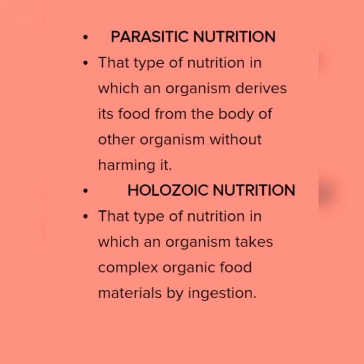In parasitic nutrition, an organism derives its food from the body of another organism, and for this we can take the example of a platform which feeds upon human blood and acts as a parasite. The last type is holozoic nutrition, in which an organism takes complex organic food material by ingestion. Ingestion is the process of taking food, which can be found in human beings.